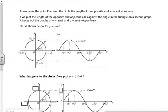So it says, as we move the point P around the circle, the length of the opposite and adjacent sides vary. So I've said that already. As it travels round, the x and the y coordinates change, and it's that what I'm plotting. So if I plot the y values, I get the sine graph. If I plot the x values, I get the cos graph.